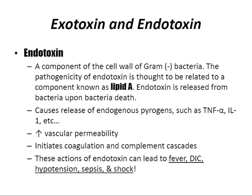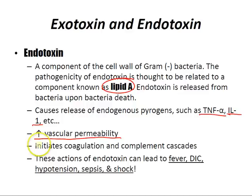Endotoxin is a component of the cell wall of gram-negative bacteria. The pathogenicity of endotoxin is related to a component known as lipid A. Endotoxin is released from bacteria upon bacterial death. It causes the release of endogenous pyrogens such as tumor necrosis factor alpha and IL-1, which causes fever. It also increases vascular permeability and — very importantly — initiates coagulation and complement cascades.